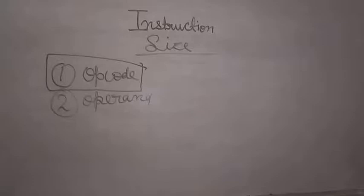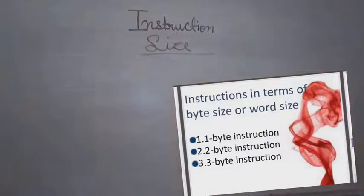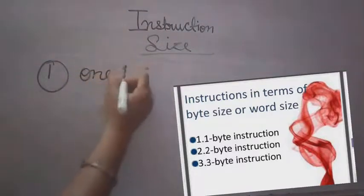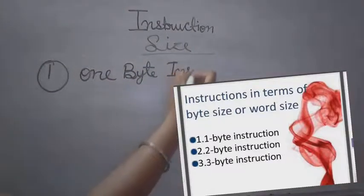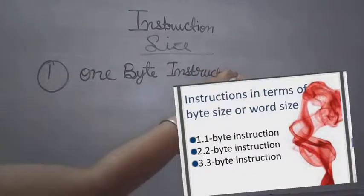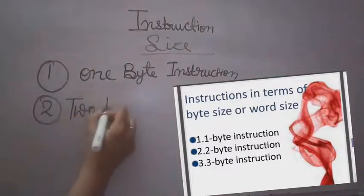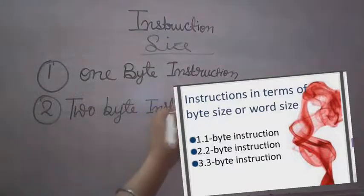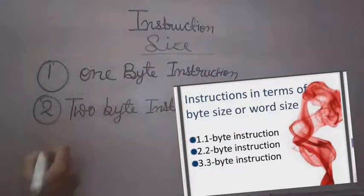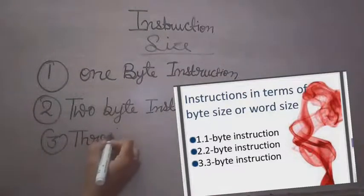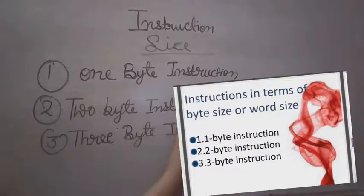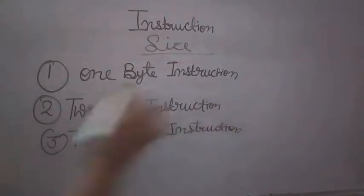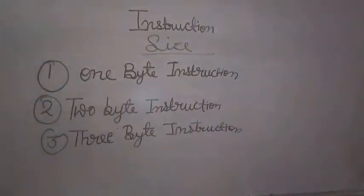According to the size of 8085 instructions, they are divided into three parts. Instruction sizes are classified into three categories: first one is one byte instruction, second one is two byte instruction, and third one is three byte instruction.